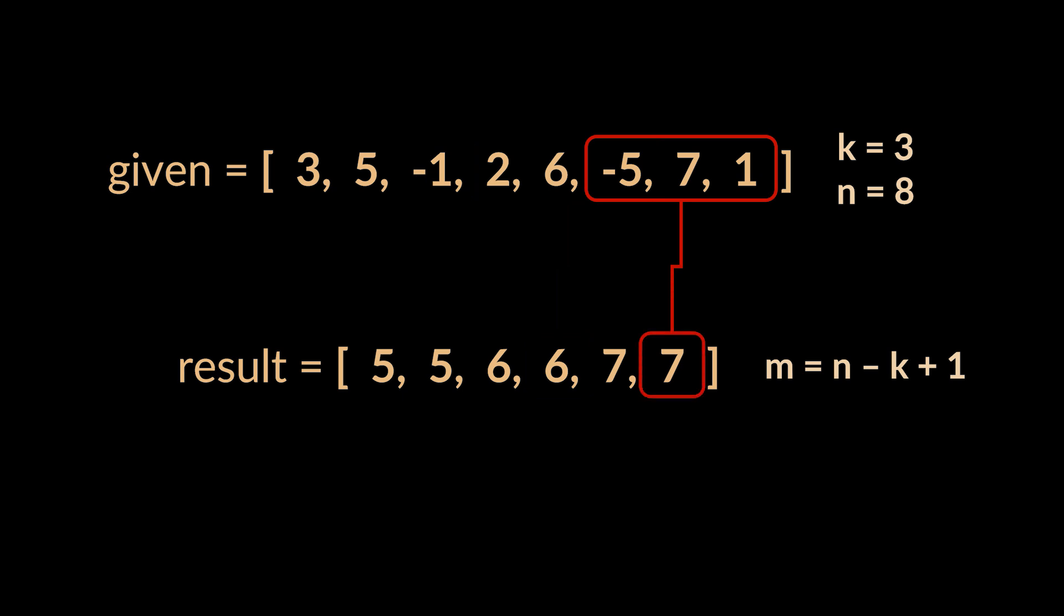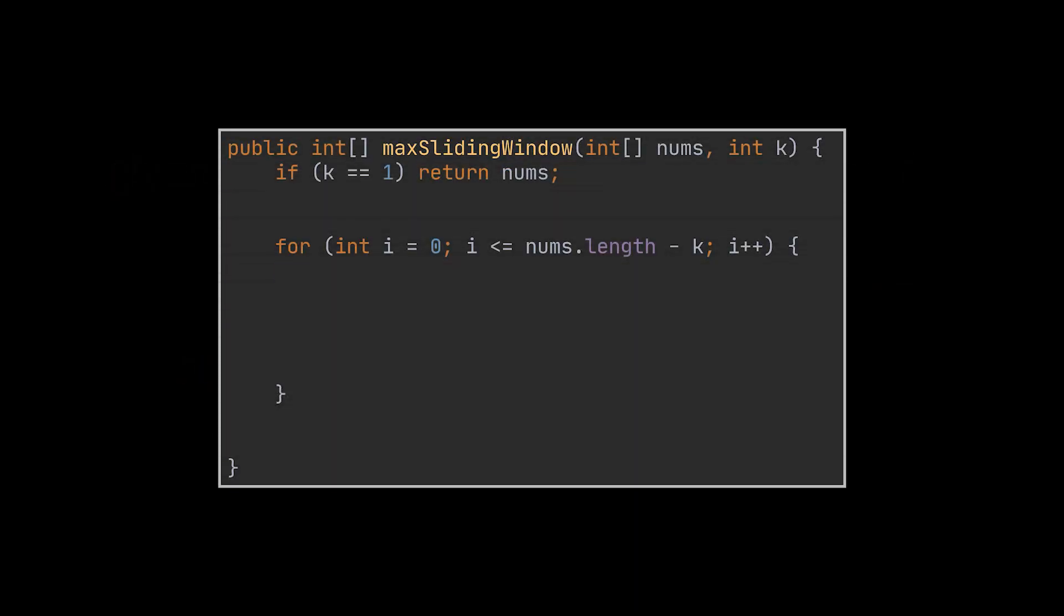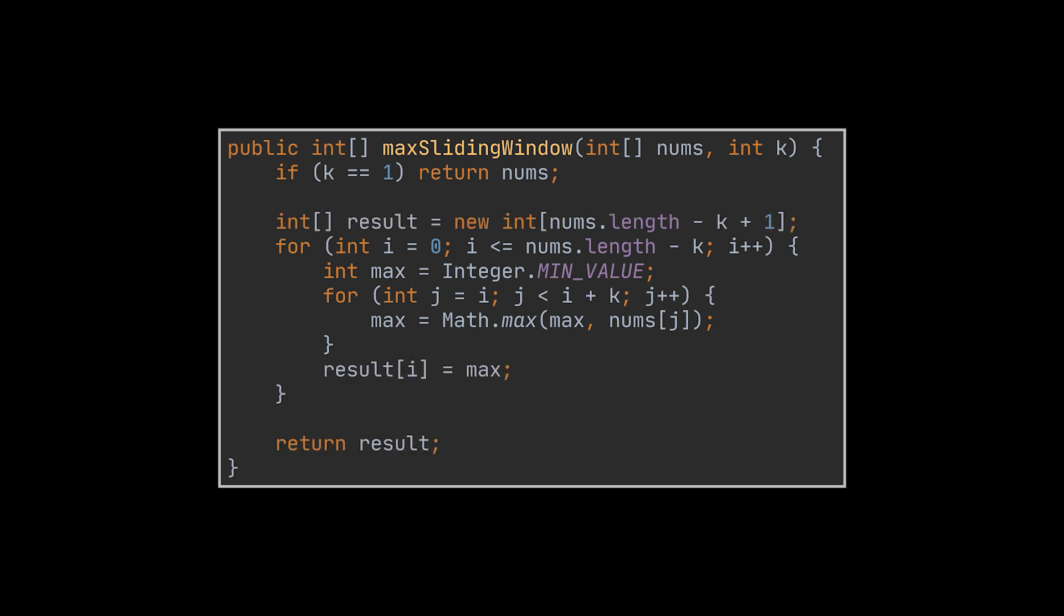The size of the resulting array will be N minus K plus 1. The first solution that comes to mind is the classic nested loop logic. So while our window is sliding, we will traverse all the elements inside the window and retrieve the maximum value among these elements. The resulting array will be the maximum values in respect to their corresponding sliding window. This implementation can be enhanced.